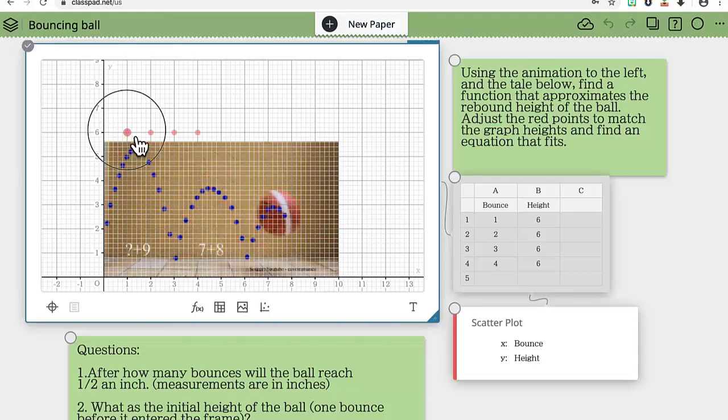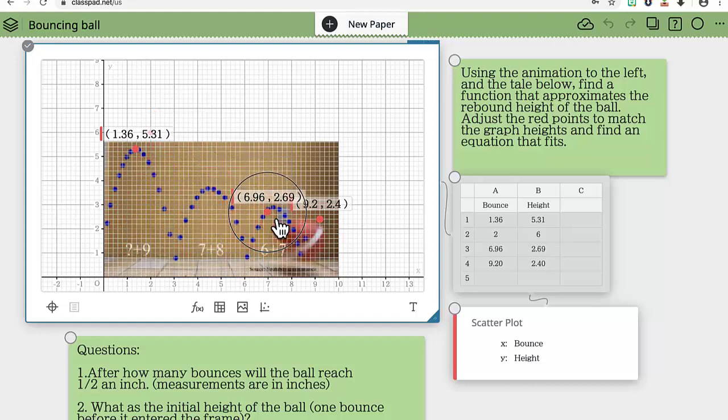So the first thing we have to do is take these dots, these red dots, and put them at the heights of each one of the individual bounces. And then we'll try to find a regression equation that matches those heights.